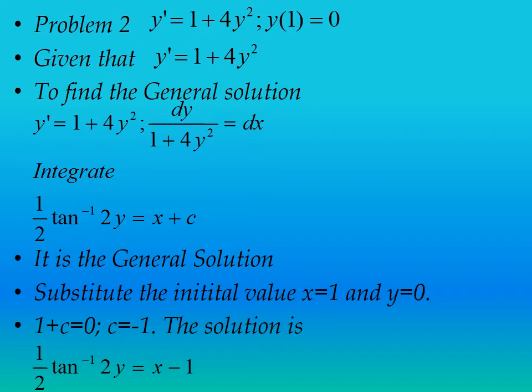Now substitute the initial value: when x = 1, y = 0. Substituting gives c = -1. So the particular solution is (1/2)·tan⁻¹(2y) = x - 1. This is the particular solution of the ordinary differential equation.